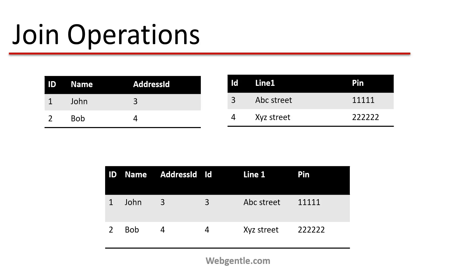This is the result table. In the result table we have data from both tables. If we ask what is the address of John, the answer is ABC Street — because John's address ID property is 3, and the details for ID 3 in the address table shows line one as ABC Street. So basically, I am performing operations on both tables and based on a common property, I am creating the result data set.